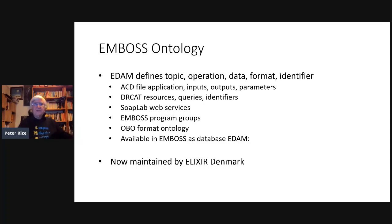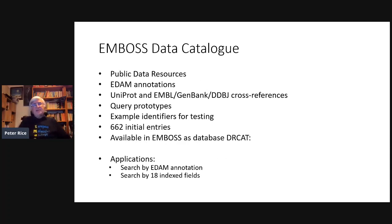We had some 400 applications in EMBOSS to kick it off, and it's grown from there. It's still maintained by John Ison. The data catalog needs some updates — it's gone a little out of date, and that's one focus before we can release an updated version. The idea was to find all the data resources out there, what sort of data they return, what identifiers they have, their cross-referencing capabilities, and put them into a data resource catalog so you can retrieve entries from remote servers.